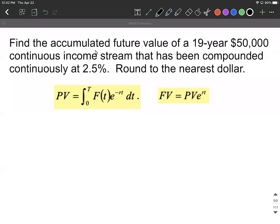Alright, on this problem, the goal is to find a future value, an accumulated future value. The information we're given: it's a 19-year $50,000 continuous income stream. So it's a constant function that's been compounded continuously at 2.5%.